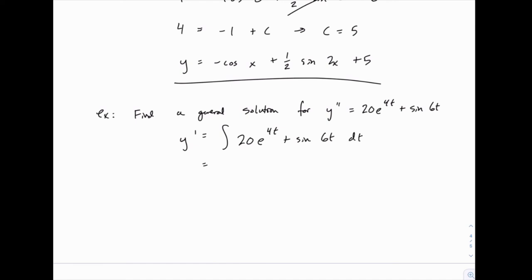That would simply be 5e to the 4t minus 1 sixth cosine of 6t plus c, and then y would be the integral of that.